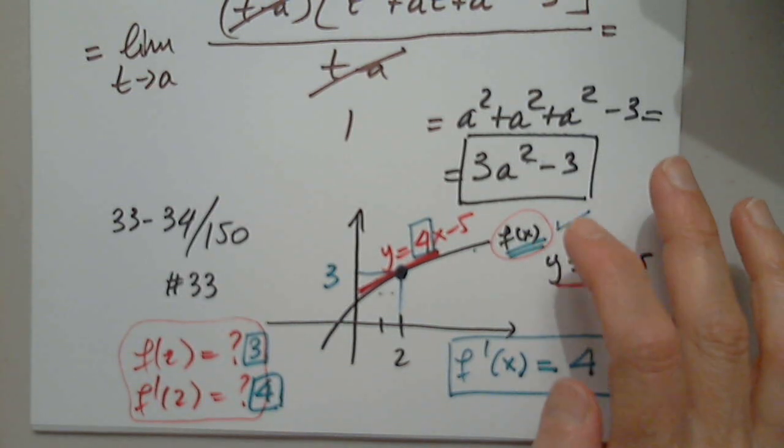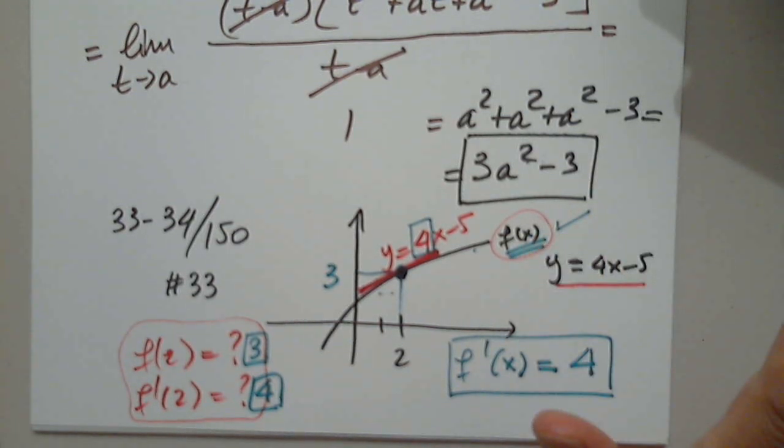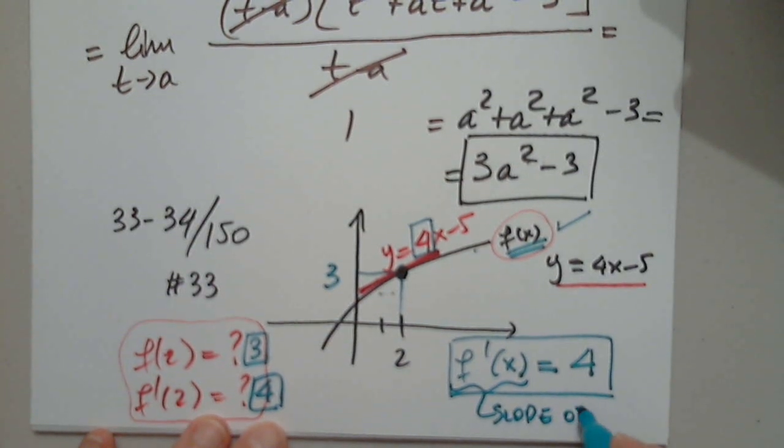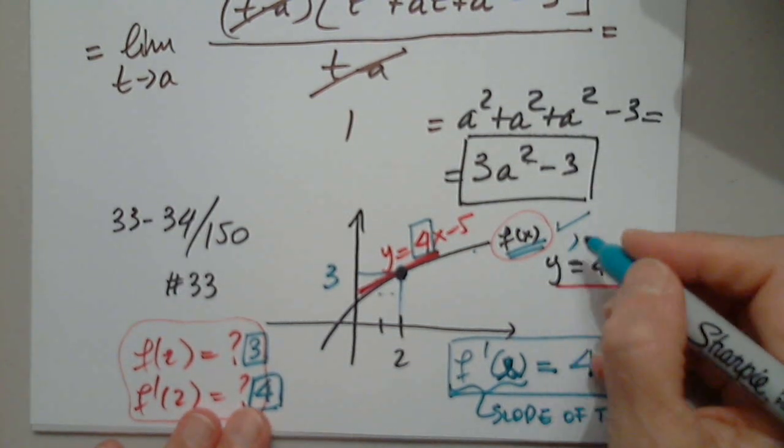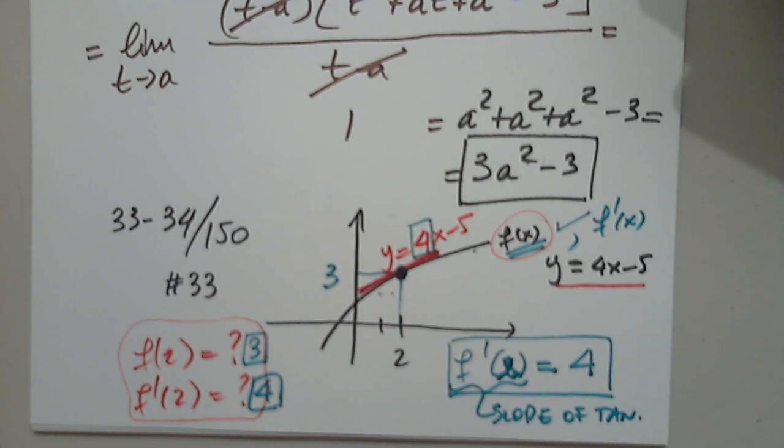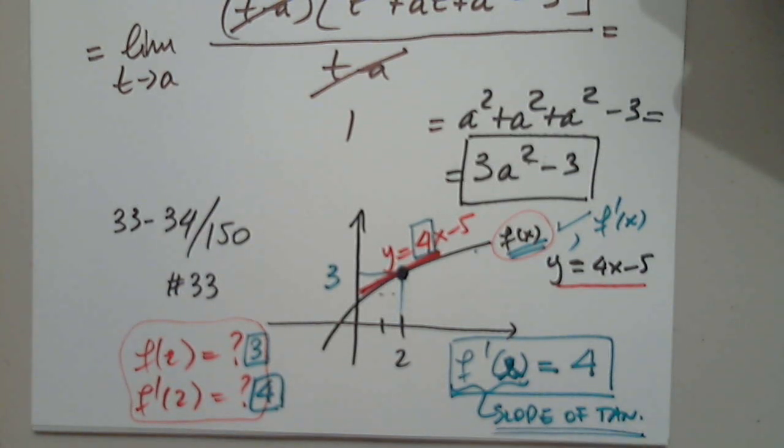f of x is not given to us, but I know that f prime of x is the slope of the tangent. f prime of 2, to be exact, at 2 exactly is 4. I don't have f of x and I do not have f prime of x, but at this particular point, f prime of 2 must be the slope of the tangent line at 2, which in this case, the slope of the tangent line is 4.